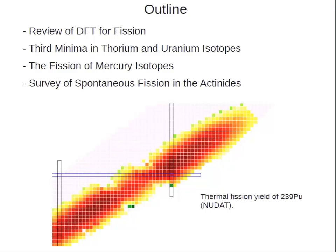The outline for this presentation: we're going to review how the microscopic model density functional theory works for fission, then review properties of thorium and uranium isotopes that have a possible third barrier structure — a third minimum where there's a possible metastable isomer — as well as the fission of mercury isotopes where a recent experiment discovered a surprising property. We'll then survey several even-even actinides and how this fission model works for spontaneous fission half-lives.